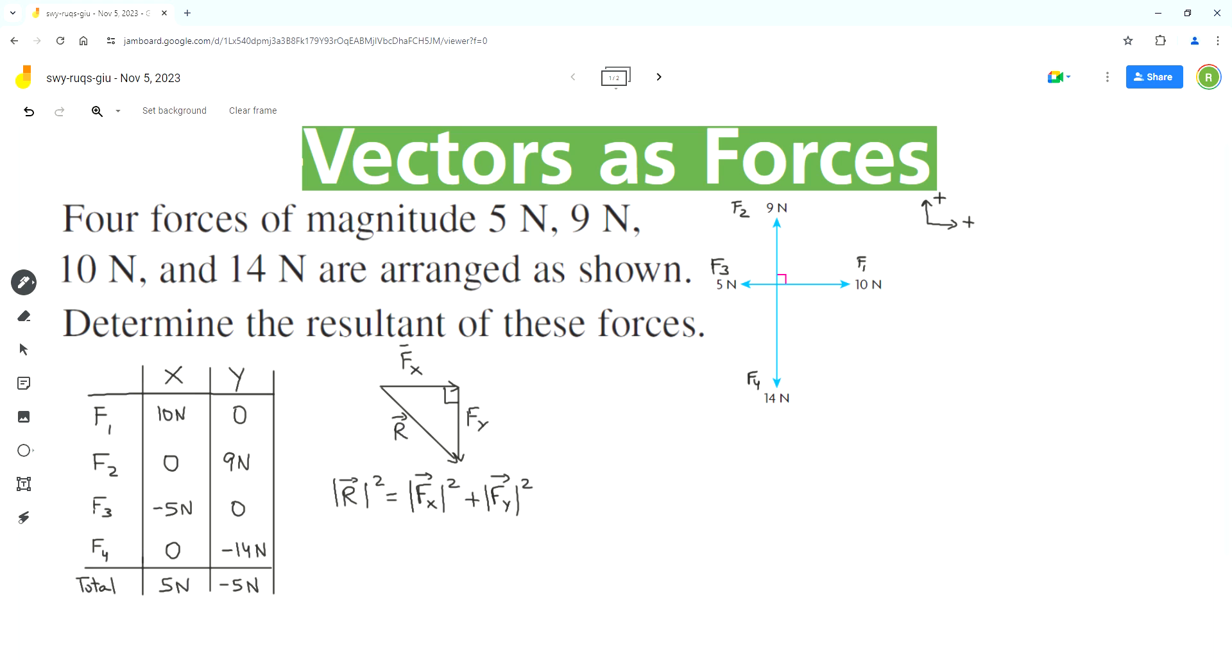We should use the vector cap for Fx and Fy. Now we can substitute in the values. Now we can apply square root to both sides, so on the left side the square root and the square will cancel each other out.